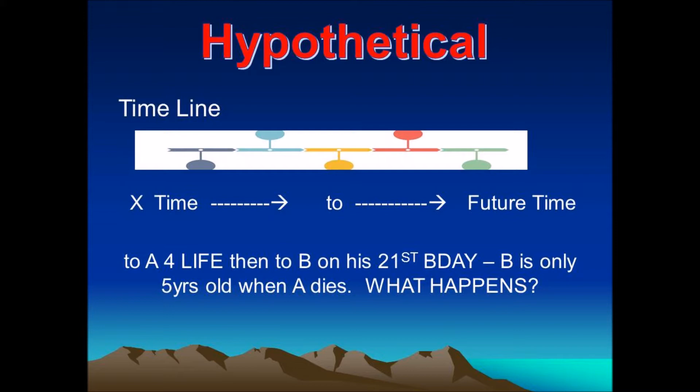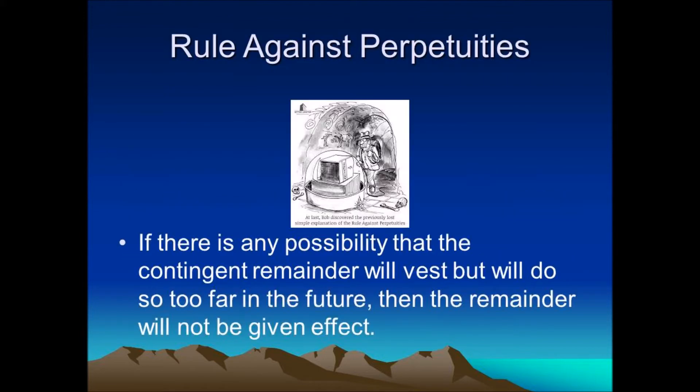For example: to A for life, then to B on his 21st birthday. What if B is only 5 when A dies? What happens to the property? Another rule that applies to contingent remainders is the old Rule Against Perpetuities.